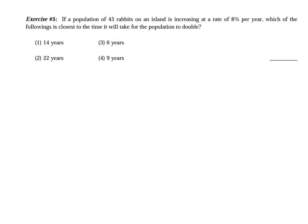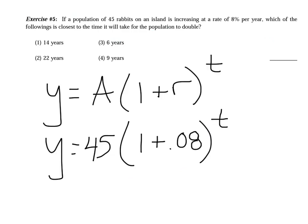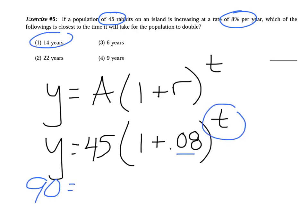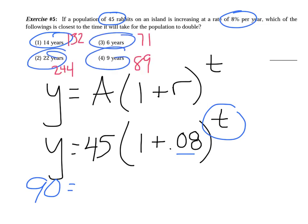Exercise 5 — try this one on your own. A population of 45 rabbits increases at a rate of 8%, so I use 0.08 as the rate. The question asks for the closest time it will take for the population to double, meaning we want to reach 90 rabbits. I substitute each answer choice for t until I find the value closest to 90. Option four is the closest to 90.